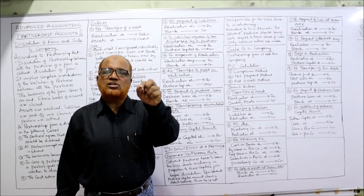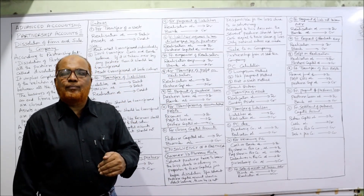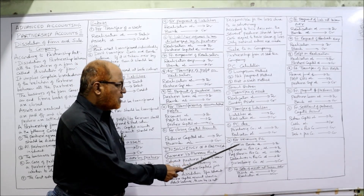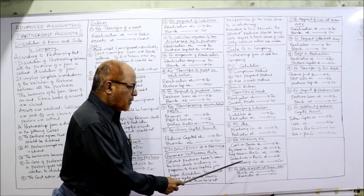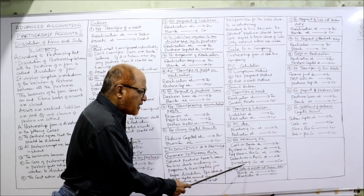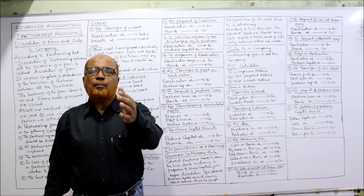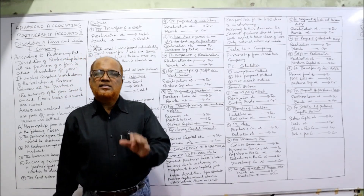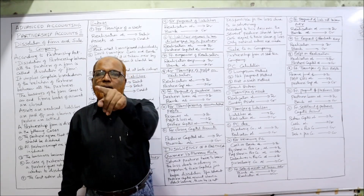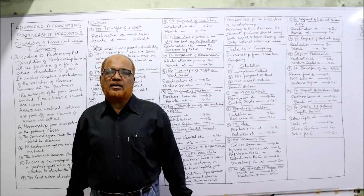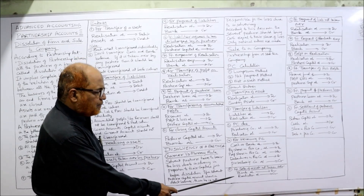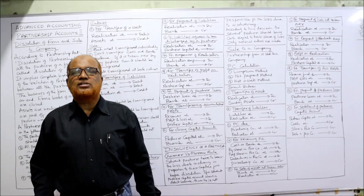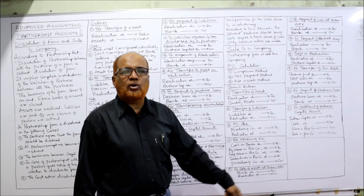Fourth entry: purchase consideration received. When the purchase consideration is received, debit all items received — cash, bank balance, equity shares in the purchasing company, preference shares in the purchasing company, debentures in the purchasing company — all debited, and the Purchasing Company Account is credited. Fifth entry: sale of assets not taken over by the purchasing company. Some assets of the partnership are not taken over, so they are sold in the market. Entry: Bank Account debit, Realization Account credit. Similarly, for payment of liabilities not taken over by the purchasing company: Realization Account debit, Bank Account credit.